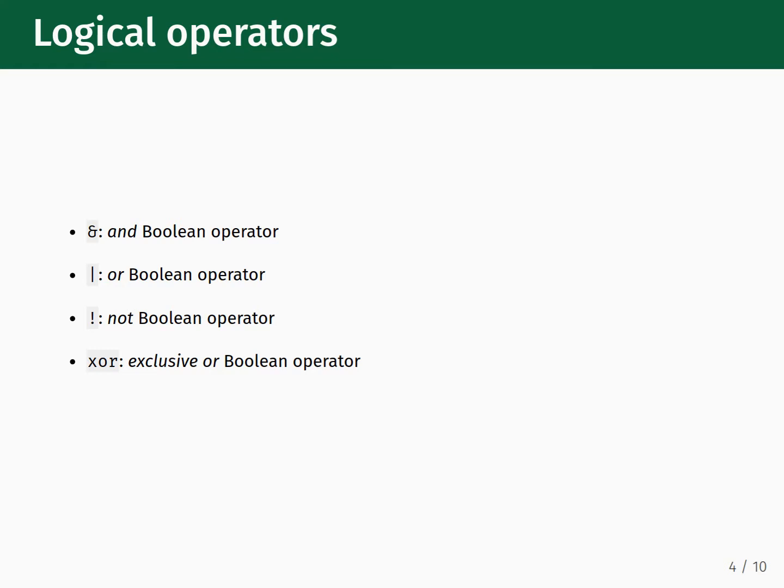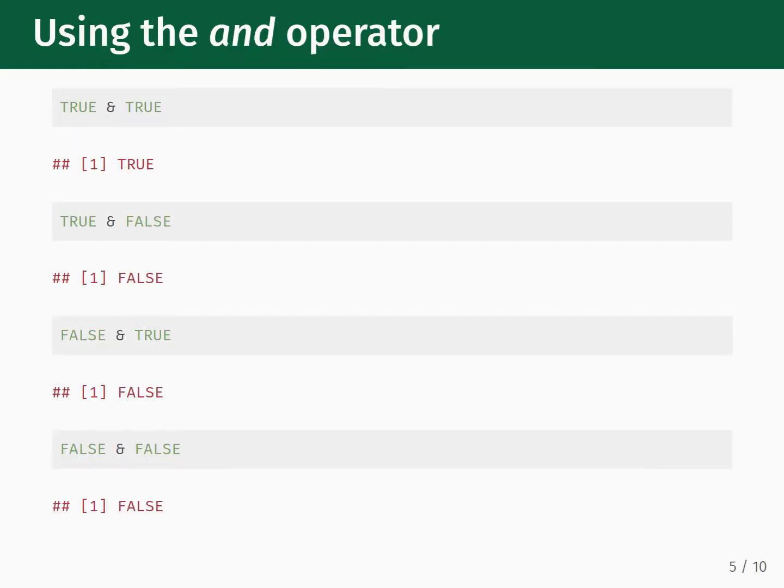Here are a couple of R examples showing how the operators work. The AND operator returns TRUE only if there is a TRUE on the left side and right side. If you have TRUE and TRUE, you get a TRUE back. If you have a TRUE and FALSE, that returns a FALSE. Same thing with a FALSE and FALSE.